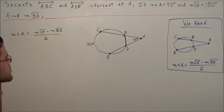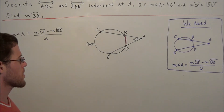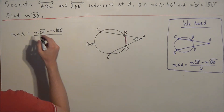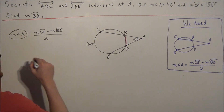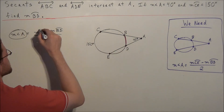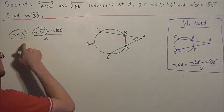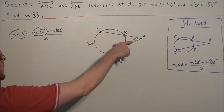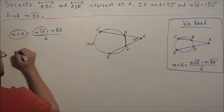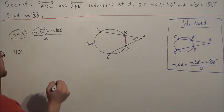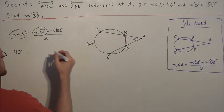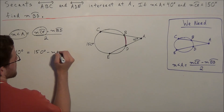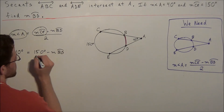Now all we need to do is substitute the information that was given to us to find the one unknown piece of information. We know the measure of angle A and we know the measure of arc CE, and we're going to use those two pieces to find the measure of arc BD. So we substitute: 40 degrees equals 150 degrees minus the measure of arc BD, all divided by 2.